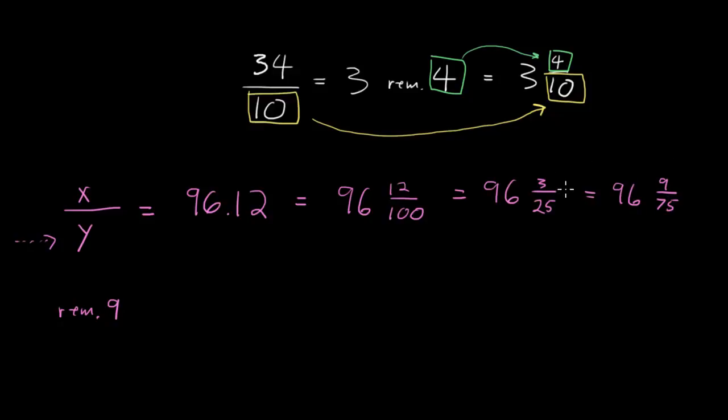The numerator of this fraction part of the mixed fraction is our remainder. And when that was the case, we said our denominator was the same as our original denominator. So that will also be the case down here now. Our denominator of the fraction part of the mixed fraction is the same as our original denominator. The same as this y. In other words, we now know that y equals 75. And 75 shows up in answer choice B.